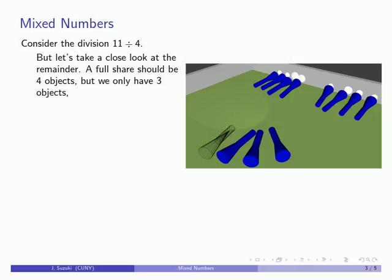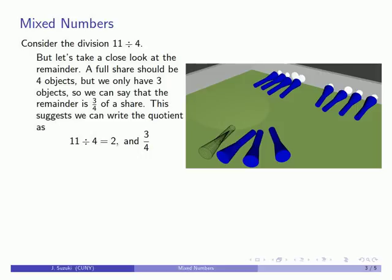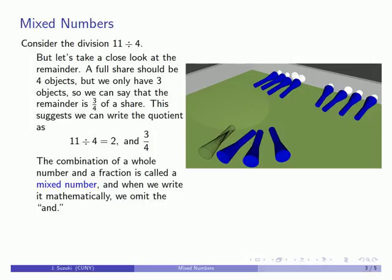And so this remainder 3 is going to be represented by the fraction 3 fourths. So rather than saying our quotient is 2 with remainder 3, we can say instead that our quotient is 2 and 3 fourths. Then this combination of a whole number and a fraction is referred to as a mixed number. And when we write it, we do the same thing we do with whole numbers and we omit the word 'and'. And so we write this 2, 3 fourths.